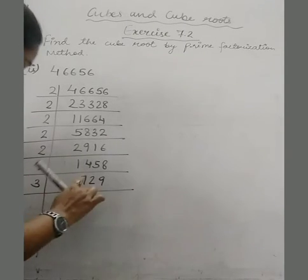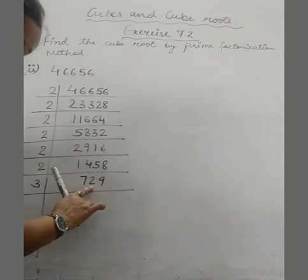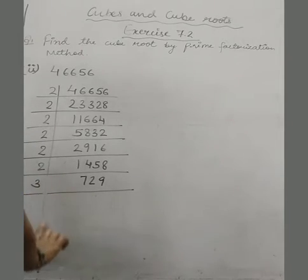So we will add all these numbers. 7 plus 2 is 9 and 9 is 18. So 18 is divisible by 3. So it means this number will be divisible by 3.